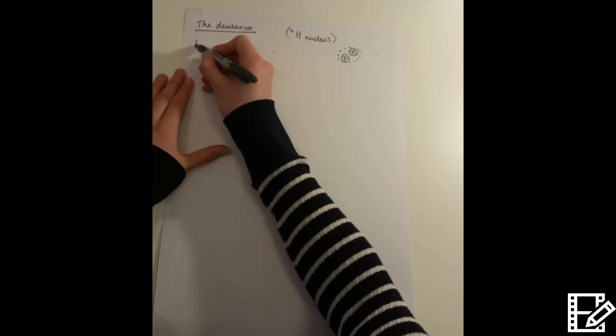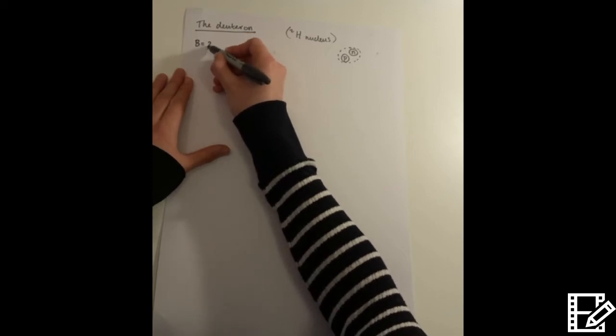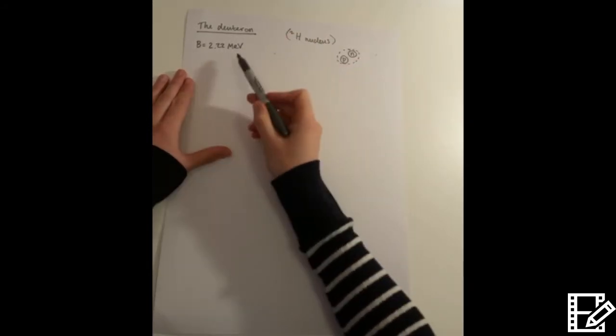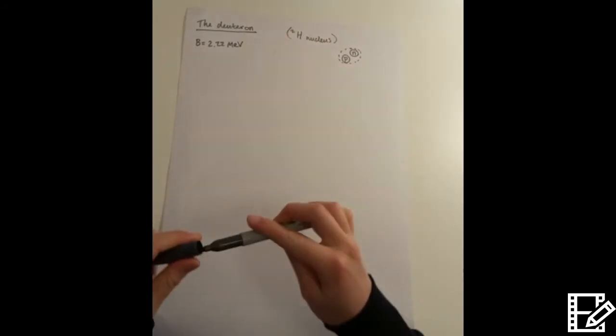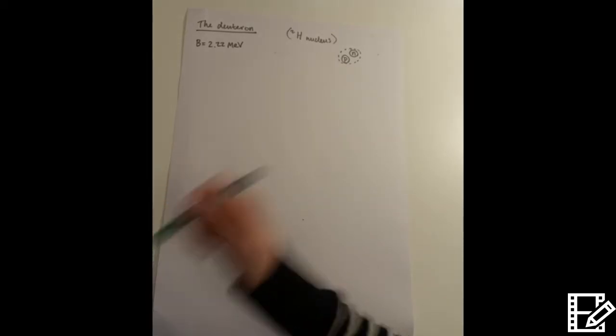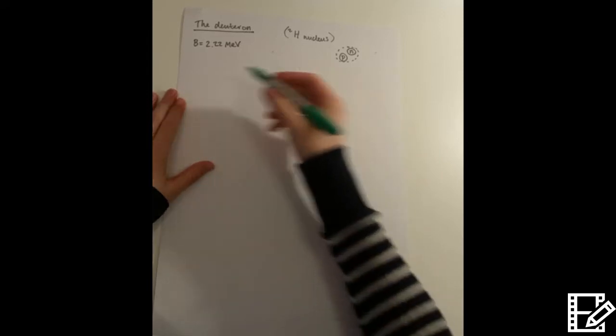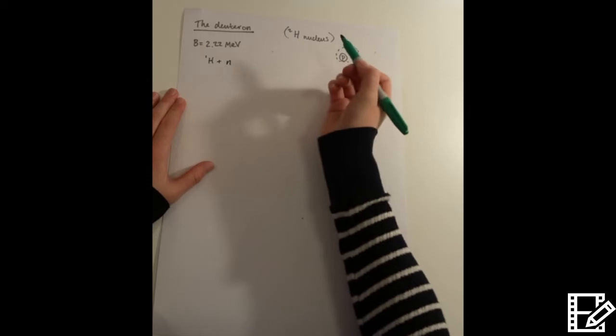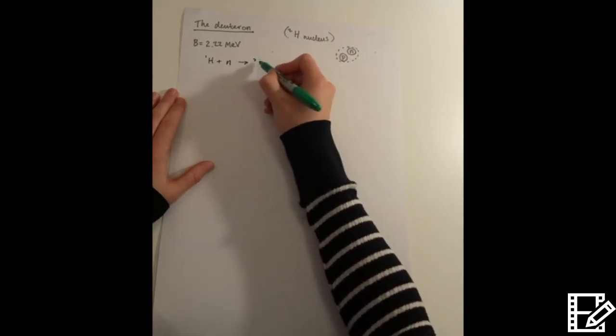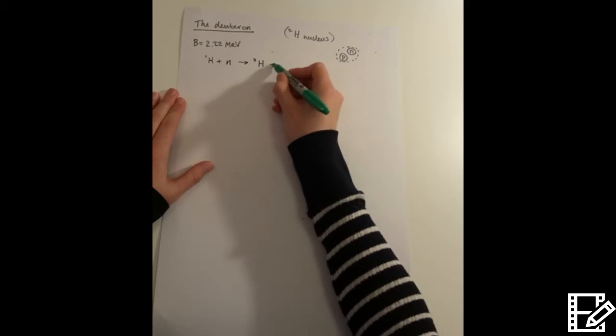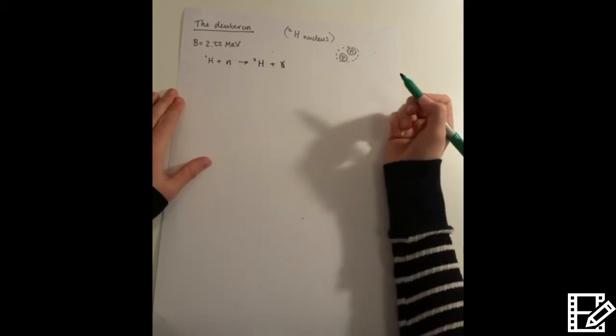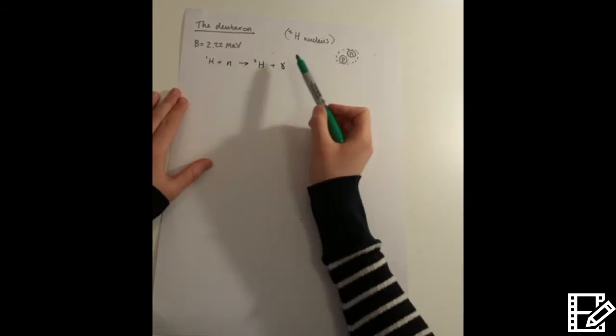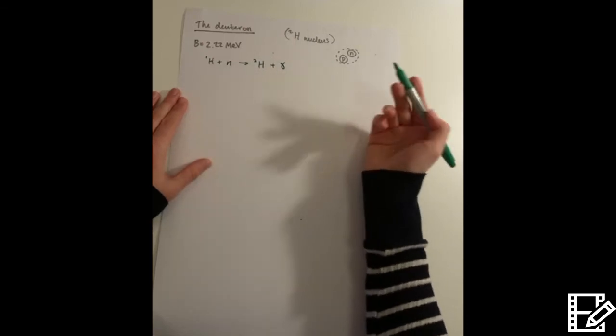It has a binding energy of approximately 2.22 MeV, and there are several ways that this binding energy can be determined. For example, we can measure it by combining a proton and a neutron to form deuterium. This releases a photon or gamma ray, and by measuring this energy, we can determine the binding energy of the deuteron.